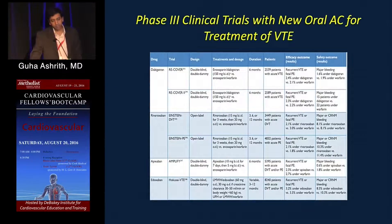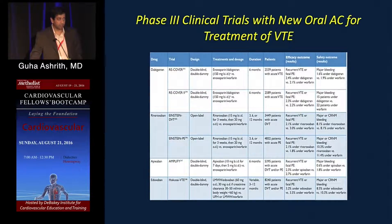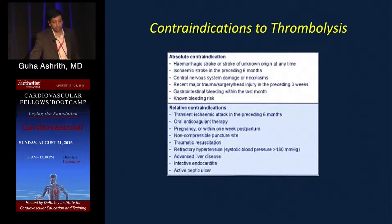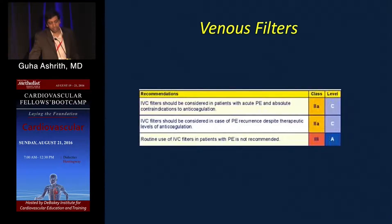Newer oral anticoagulants are all at least as good as warfarin, with a clearly lesser bleeding risk — particularly apixaban and slightly rivaroxaban. Contraindications to thrombolysis include any stroke — hemorrhagic or ischemic — and central nervous system neoplasms. Age over 75 is associated with significantly higher intracerebral bleeding risk with thrombolytics, though it has not yet been formally incorporated into guidelines.